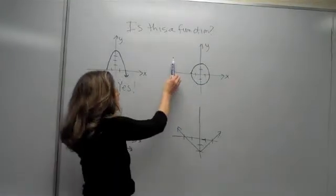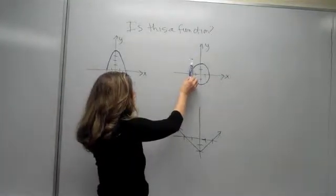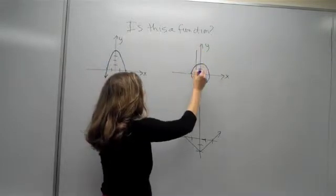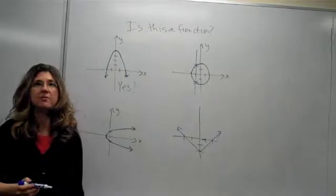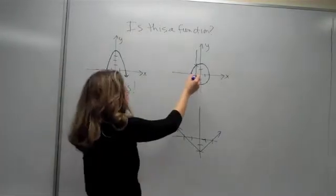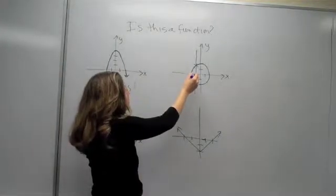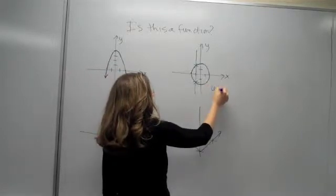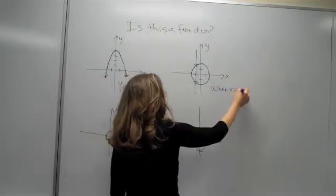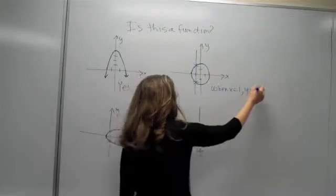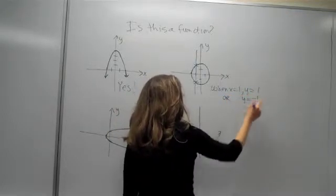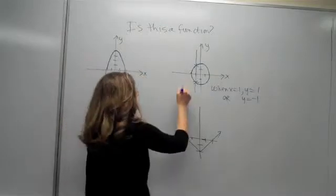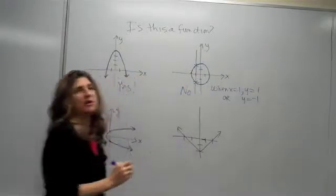Note that this graph does not represent a function because here, this vertical line crosses the graph two times. Thus, for the relation value of x is 1, when x is 1, then y could be 1 or y could be negative 1. Thus, this does not represent a function.